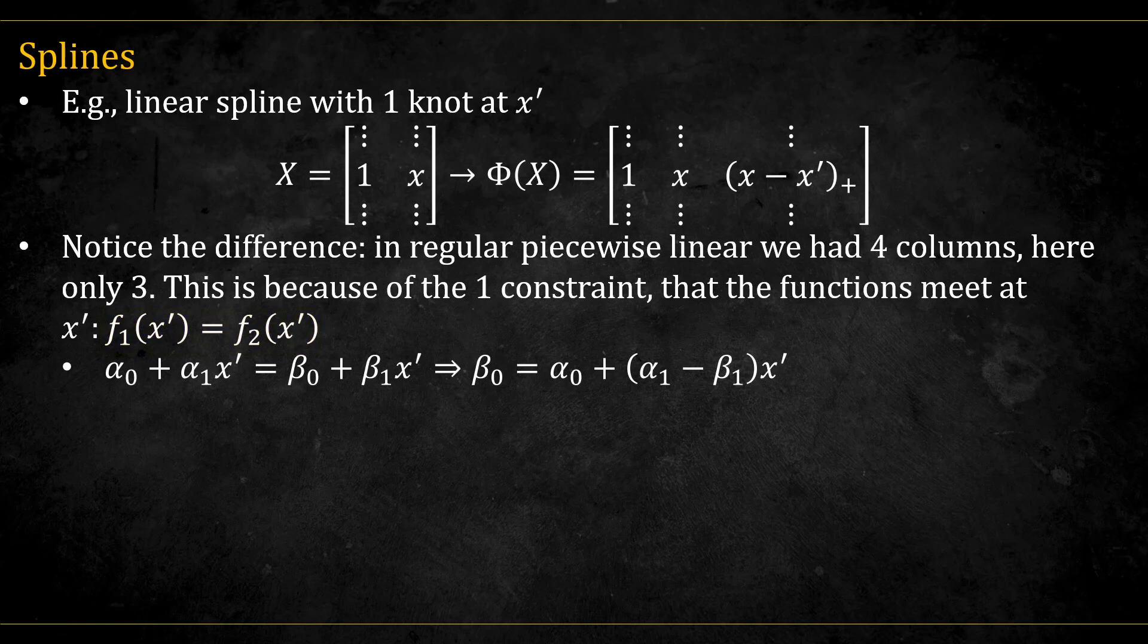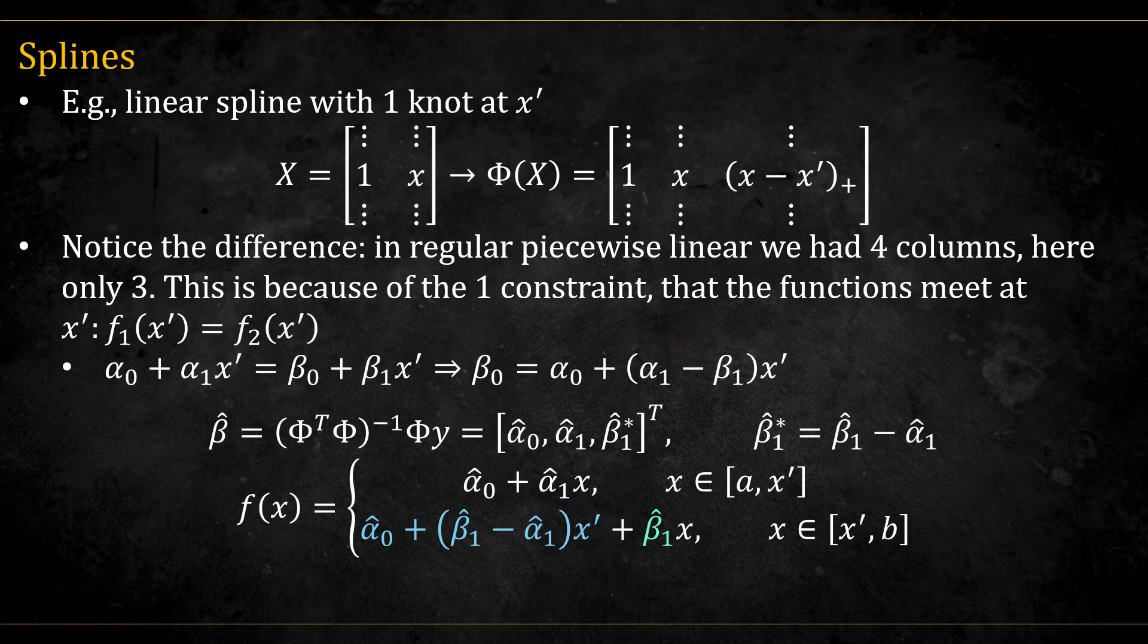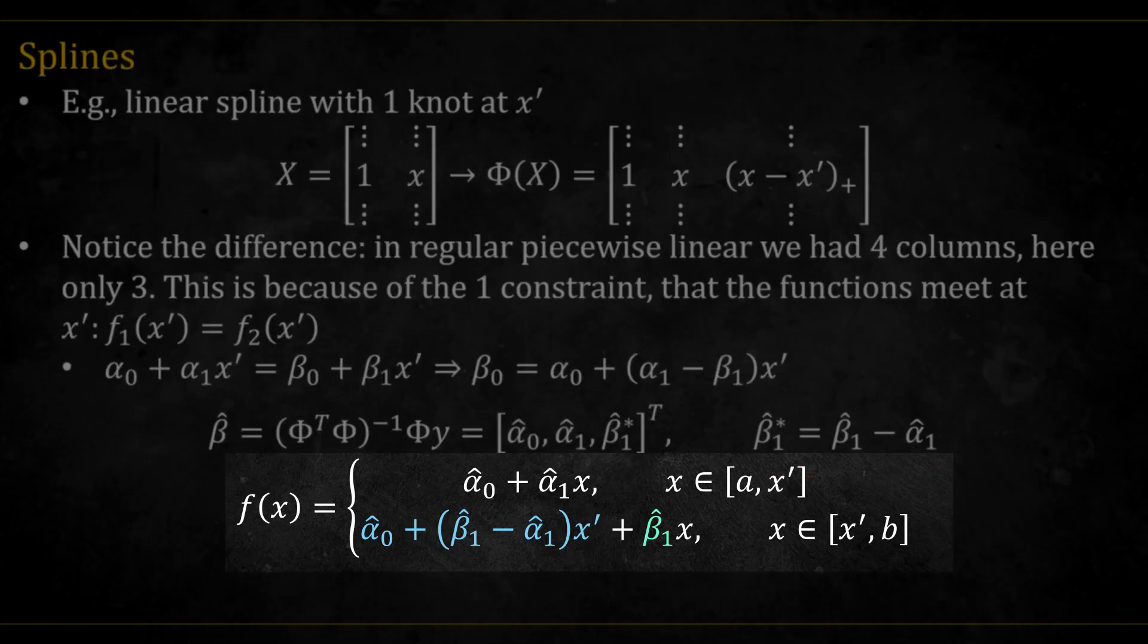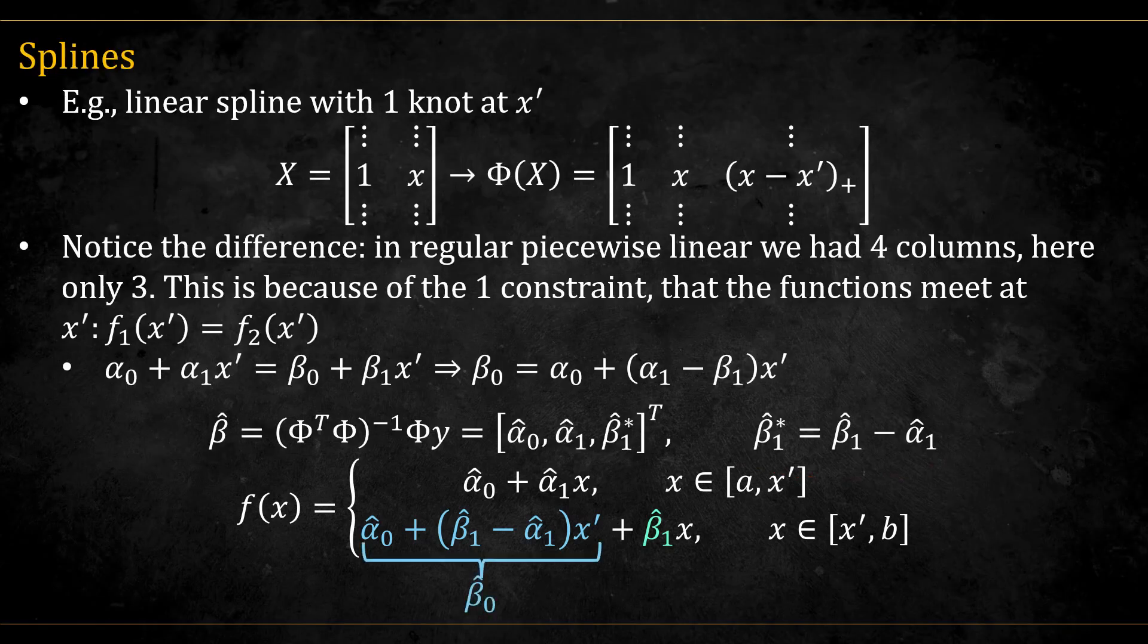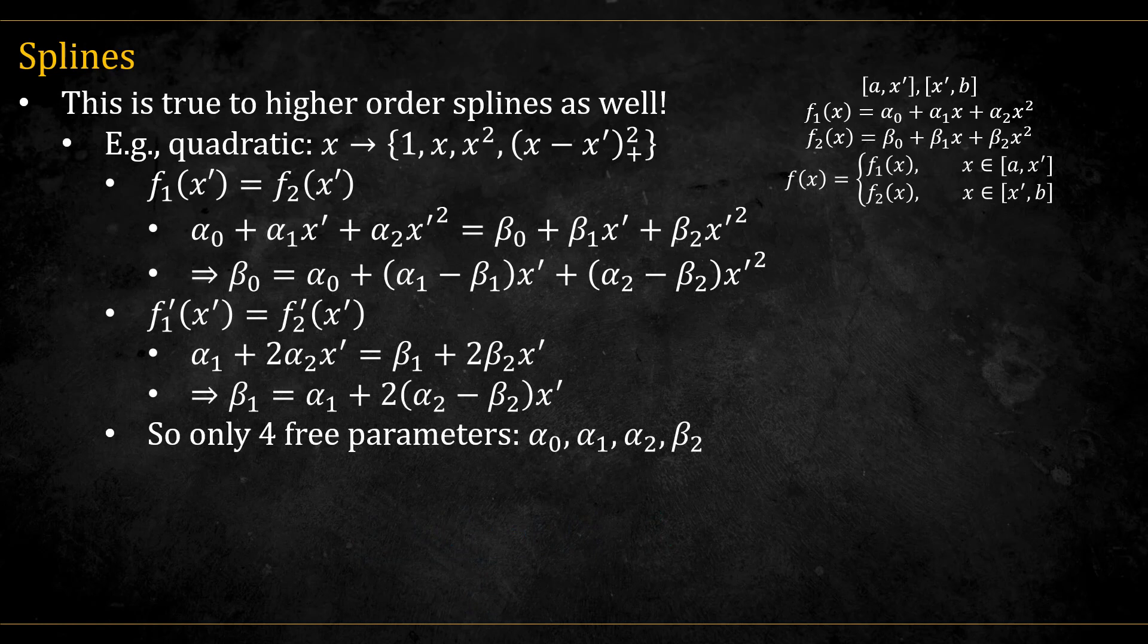So whatever alpha zero, alpha one, and beta one we choose, beta zero will be determined because the two graphs must meet at the knot intersection. Once we fit the model, we get the coefficients. If we re-parametrize beta one as follows, we get the two different functions, where we can call this beta zero.